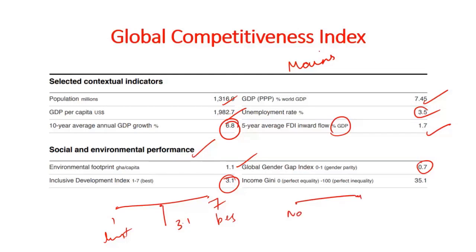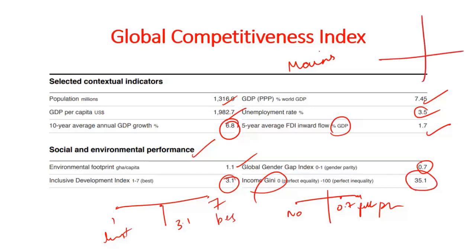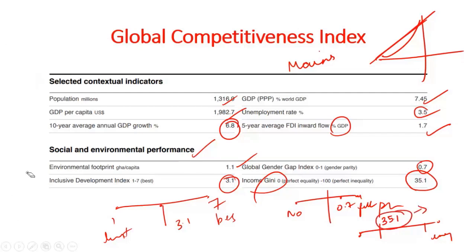Income inequality measured by the Gini coefficient has yielded a value of 35.1, measured on a scale of 0 to 100, where 100 indicates perfect inequality and 0 indicates perfect equality. India's value is somewhat nearer to the perfect equality value, but the manners of inequality in Indian society should not be ruled out. These data points become important in the perspective of the mains examination.